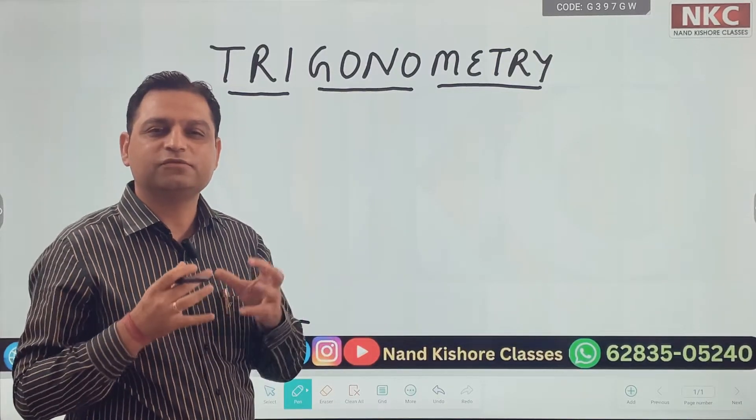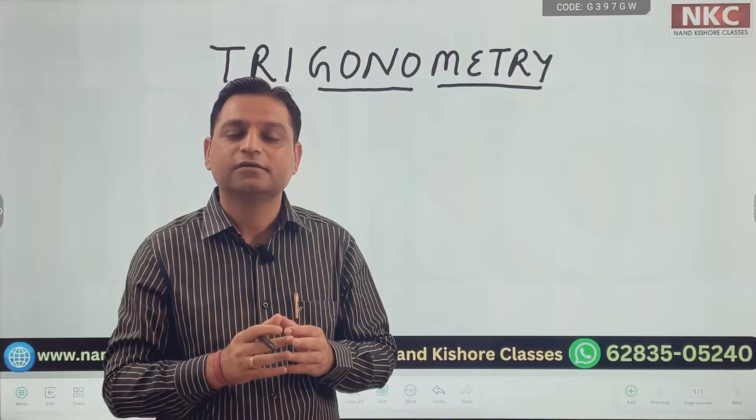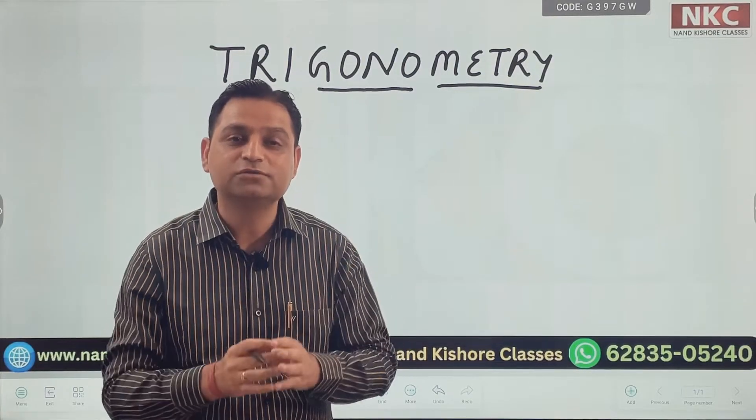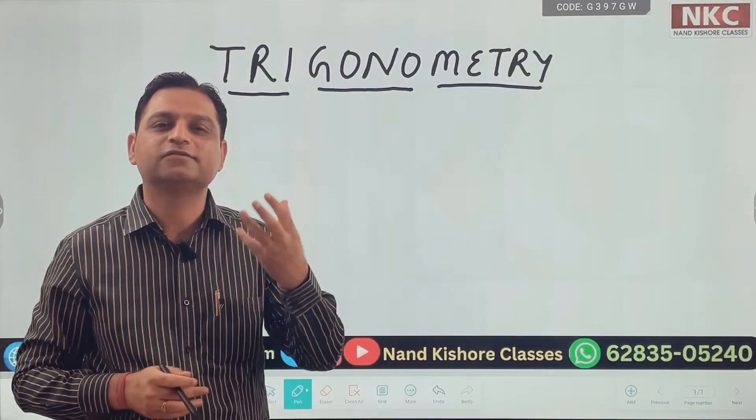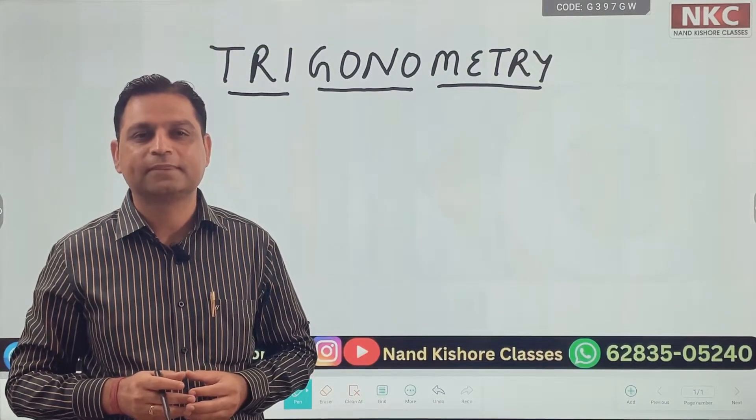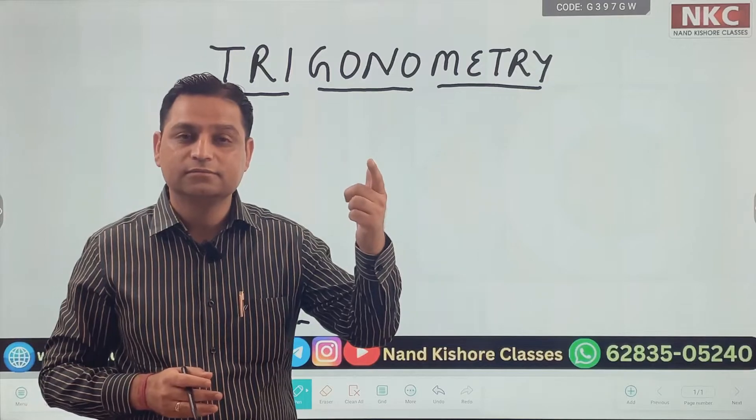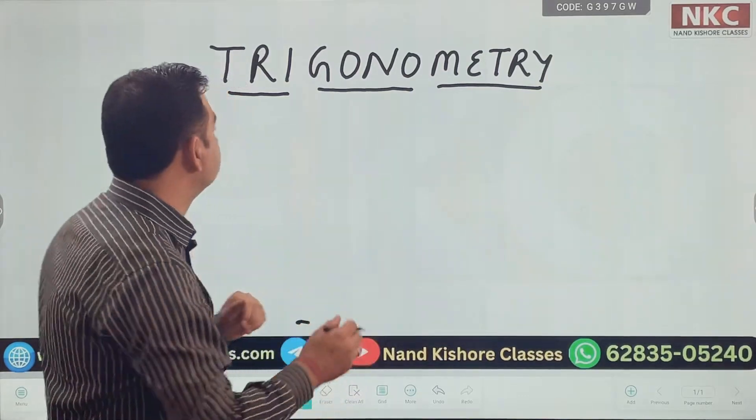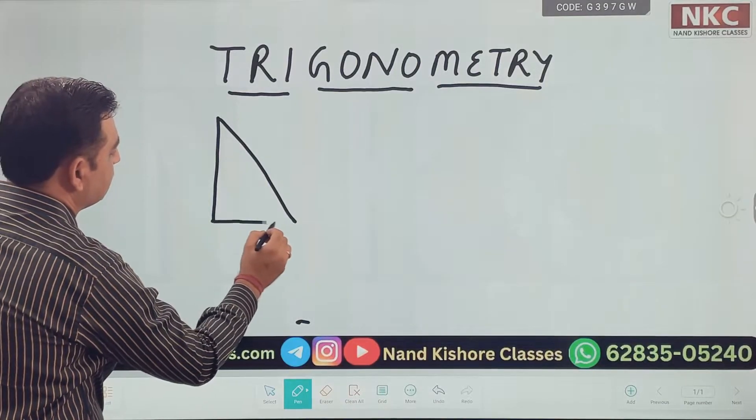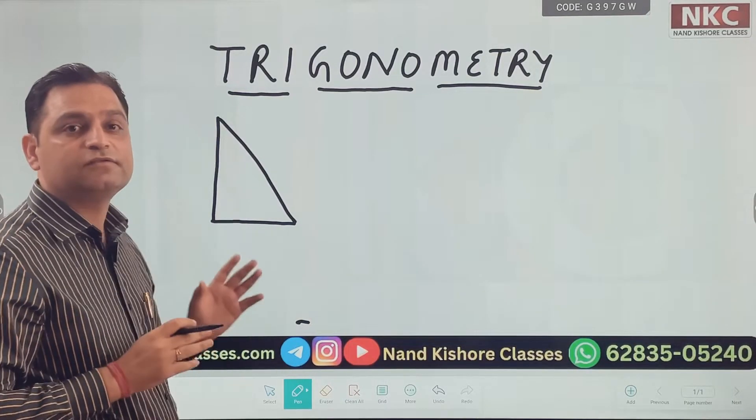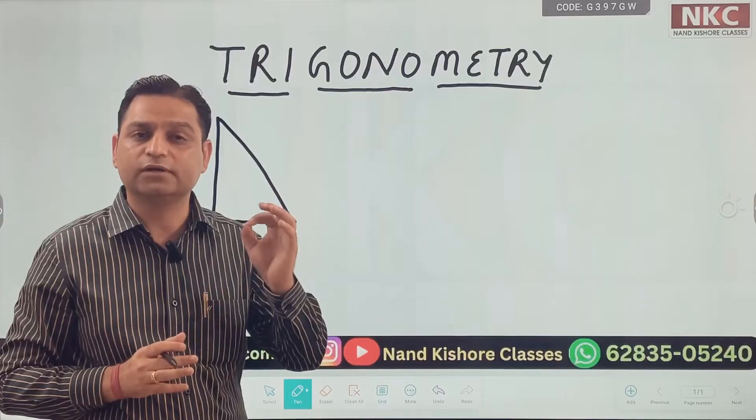That means we are going to talk about triangles because triangle is the polygon which has three sides and three angles. Now, which type of triangle? That is the main thing. We should know that we are going to deal with right angled triangle only. This is right angled triangle which we are going to deal in trigonometry.